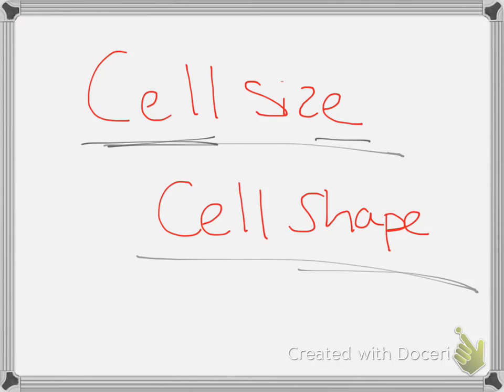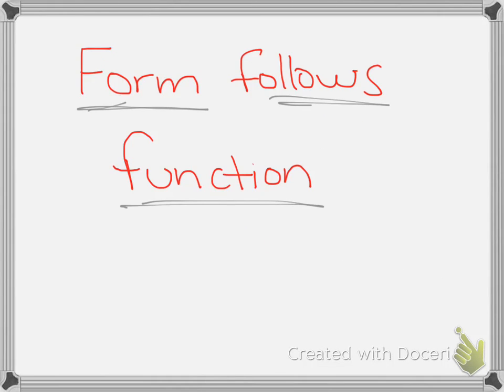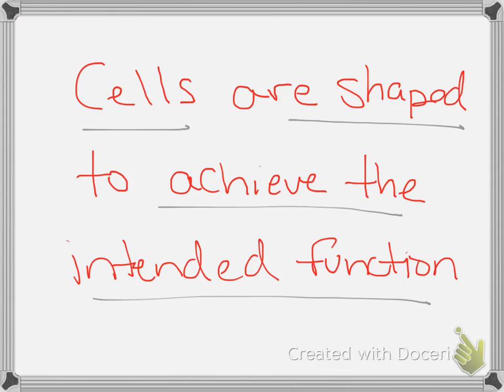We're going to look at cell size and cell shape. One important thing to remember about cells is that form follows function. What does that mean? It means that cells are shaped to achieve the intended function. Cells are shaped in the way that they're going to be able to function most efficiently.